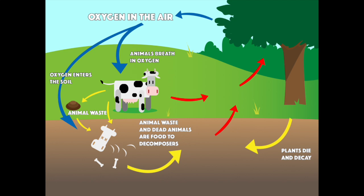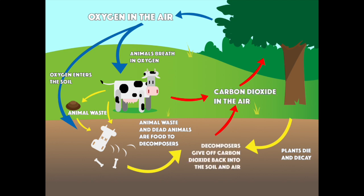Both plant and animal waste and their byproducts are food for decomposers. These decomposers break both plant and animal remains and byproducts down, and also release carbon dioxide back into the ground and the air.